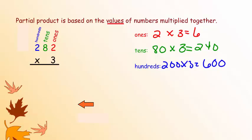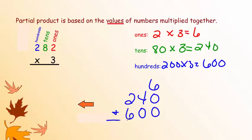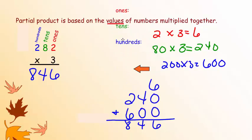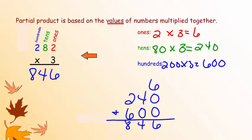Our next step is to rewrite these answers and put them in order of their place value. The first one is 6, then we're going to add 240 — make sure the ones place is lined up. The last number is 600, so the 6 goes in the hundreds place with zero tens and zero ones. Then we add these values: 6 plus nothing is 6, 4 plus nothing is 4, and 2 plus 6 is 8. The answer is 846.